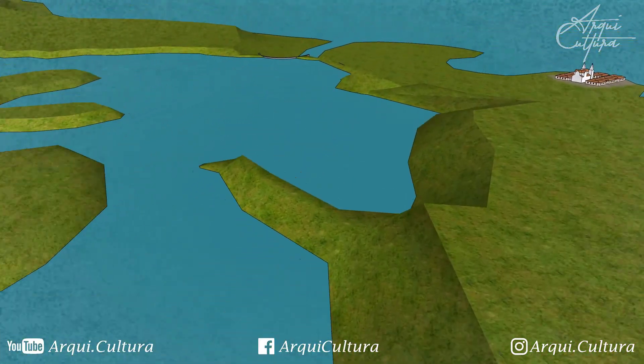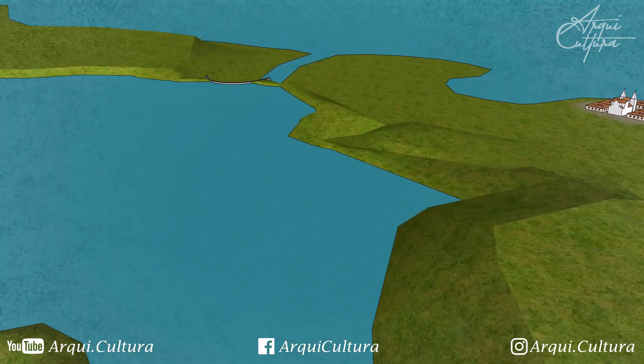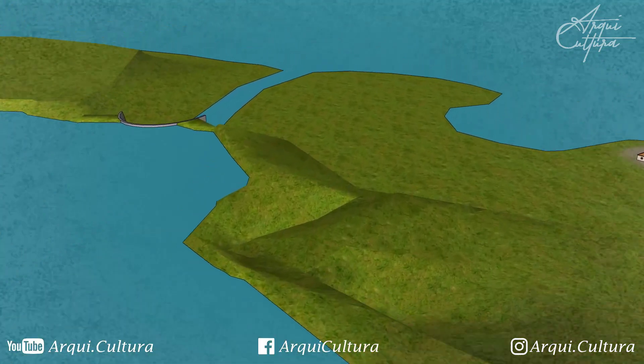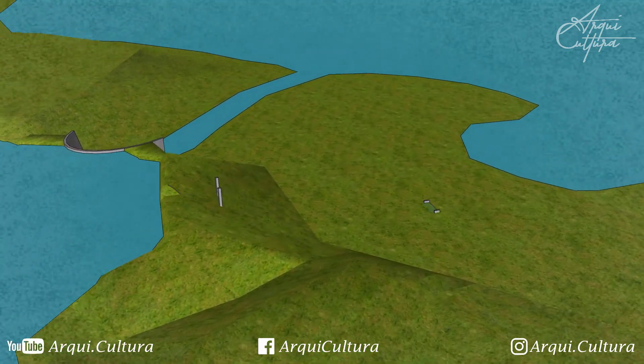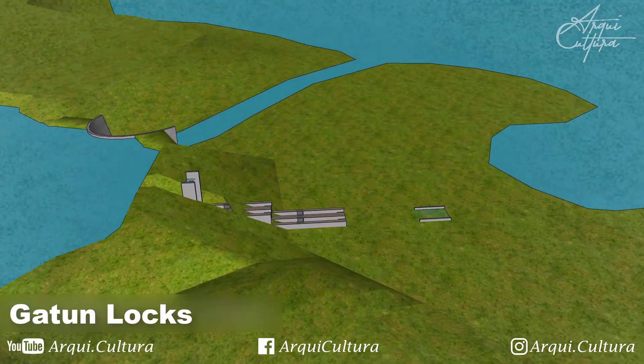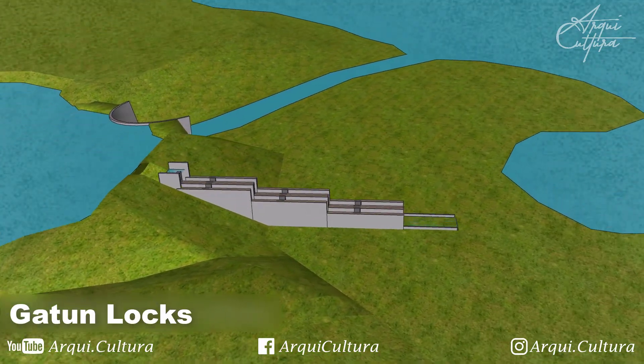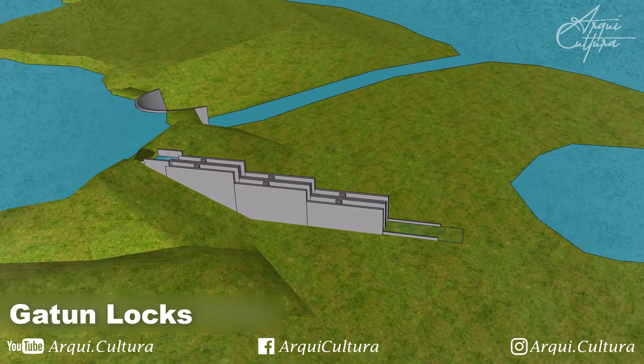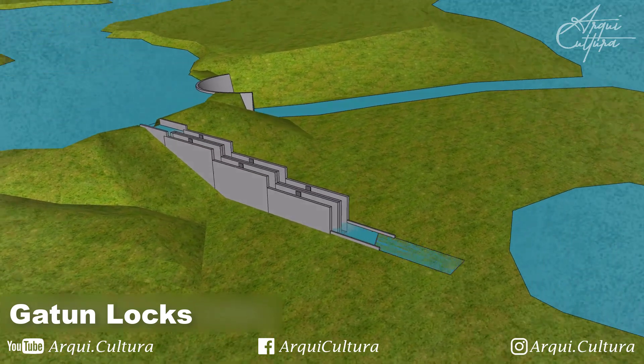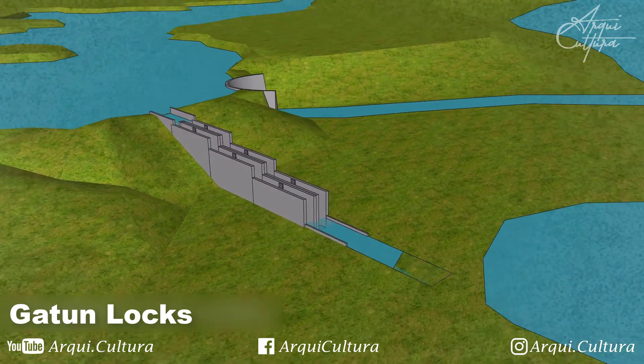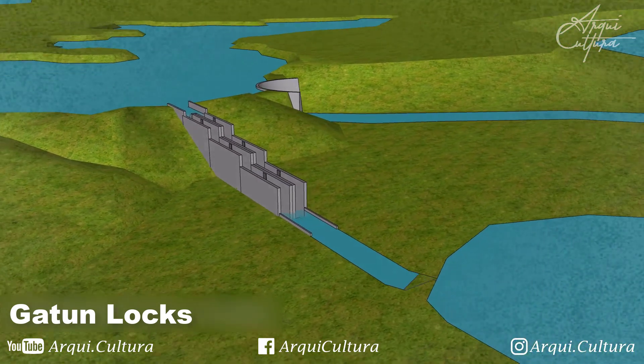Now let's head to the Atlantic side. Here, the Gatun locks were constructed, consisting of three double locks that directly communicate with Gatun Lake.